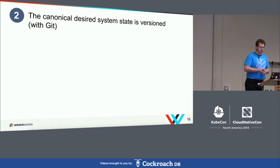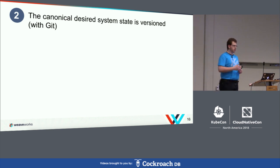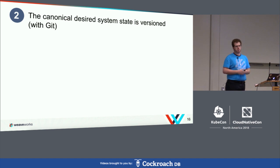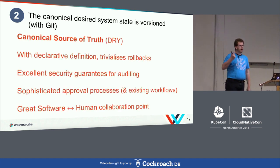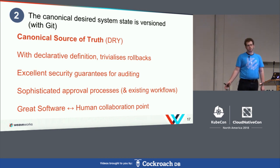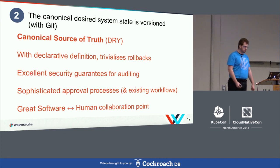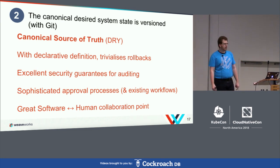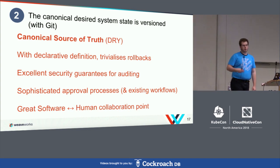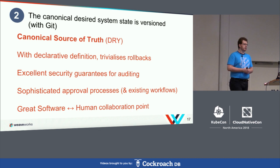The next principle is the canonical desired state of the system is versioned with Git. You have this declaration of your system stored in a version control system — your one canonical source of truth. Everything else is derived and driven from that source of truth. It trivializes rollbacks because a rollback just becomes a git revert. It has excellent security guarantees — you can use your key to sign commits to enforce strong security guarantees about authorship and provenance.